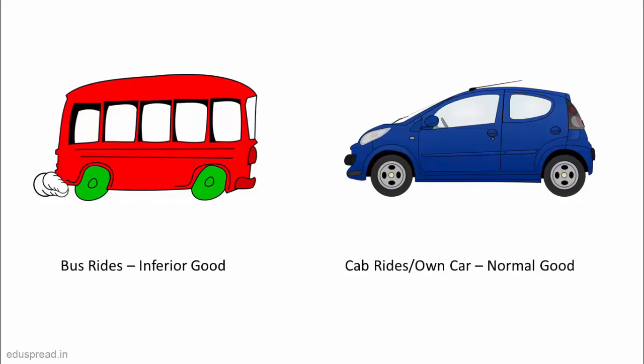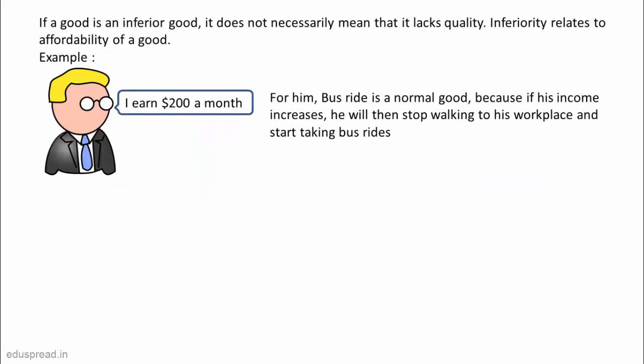Before proceeding further, there are some important points to keep in mind. If a good is an inferior good, it does not necessarily mean that it lacks quality — inferiority relates to affordability. For example, someone earning only two hundred dollars a month may prefer to walk to work and not use public transport. For this person, bus ride is a normal good because if his income increases he will stop walking and start taking bus rides. And if his income rises further, bus rides will become an inferior good as he starts taking cab rides more often.